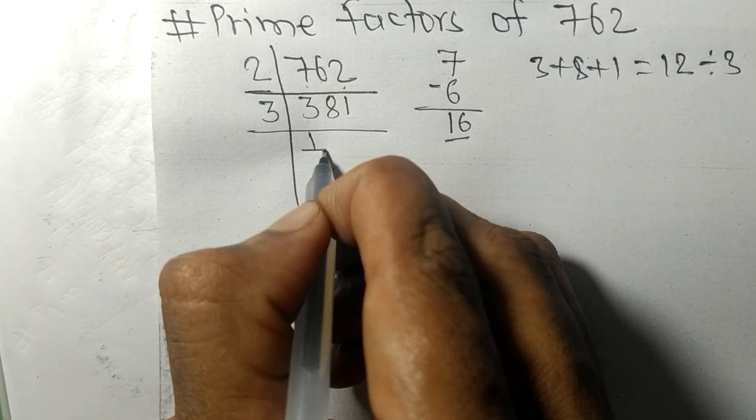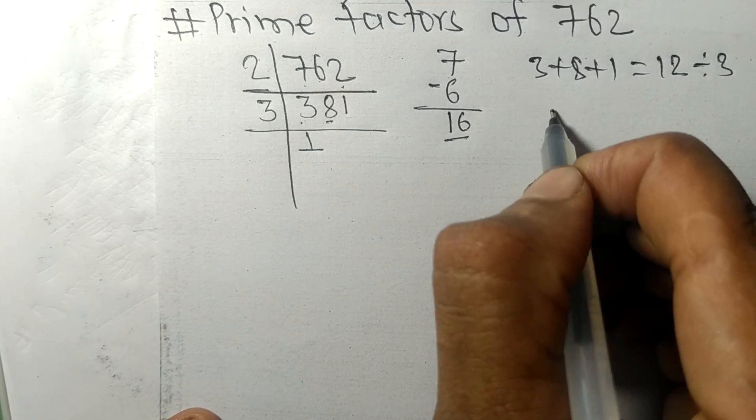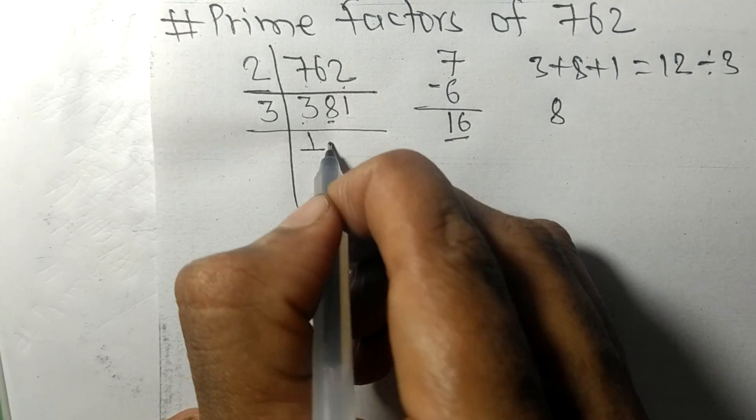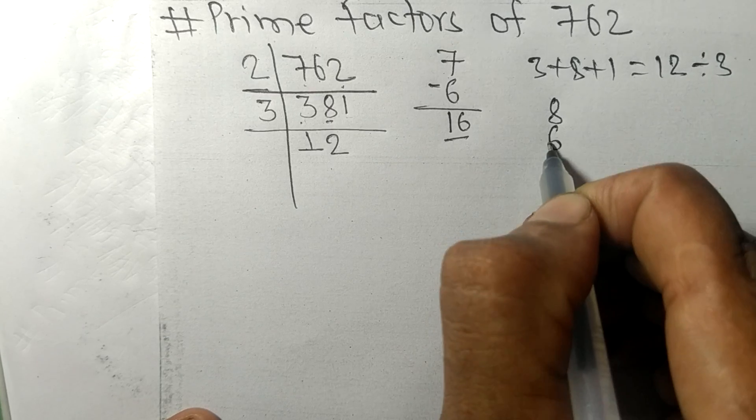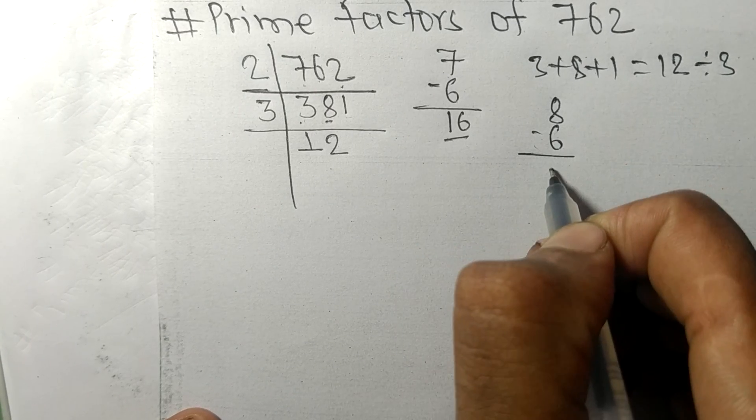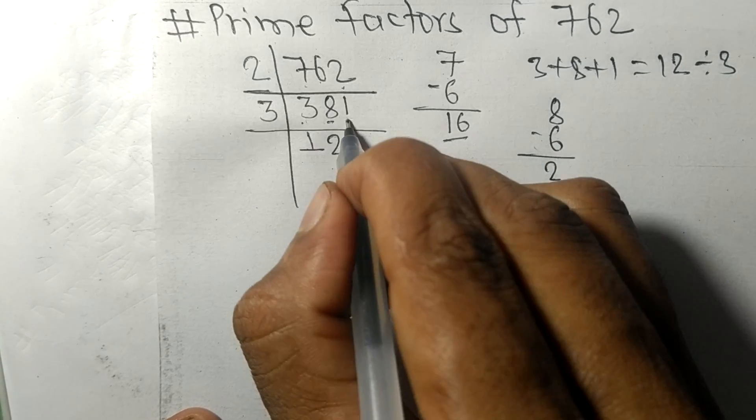3 times 1 means 3. Now we have 8, 3 times 2 means 6, on subtracting we get 2.